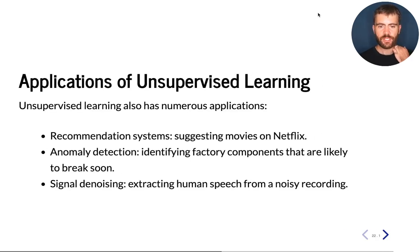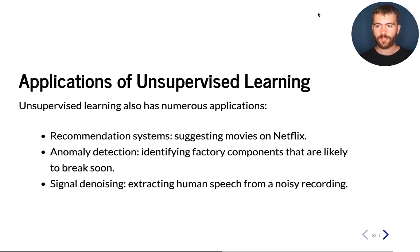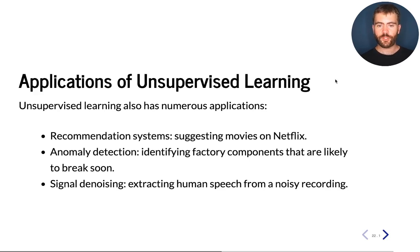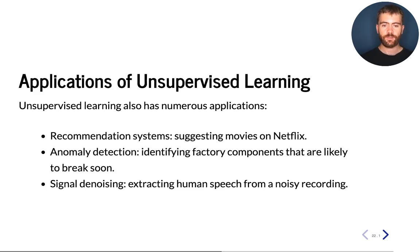Unsupervised learning also has a lot of practical applications. There are recommendation systems — for example, the movie recommendation system on Netflix — where some components or versions of these systems can be unsupervised, or complex production systems have unsupervised components. We can also use unsupervised learning for anomaly detection: if certain data are errors, noisy, or really different from normal — like a factory component likely to break — that is useful. Signal denoising is another useful application of unsupervised learning.